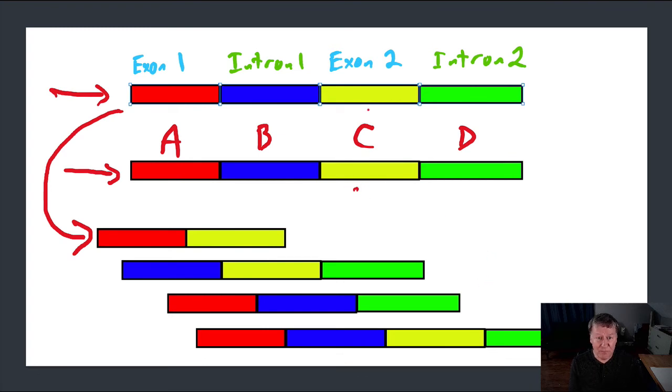And finally, I might say, no, all of them are exons, no introns this time around. In which case, I'm going to produce this one. What I am doing is called alternative splicing.